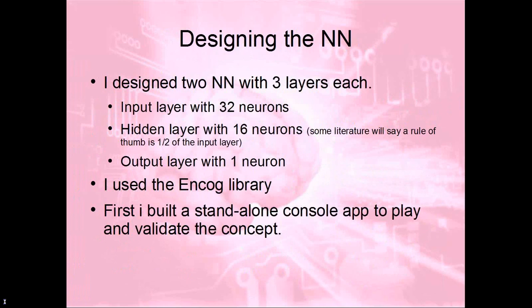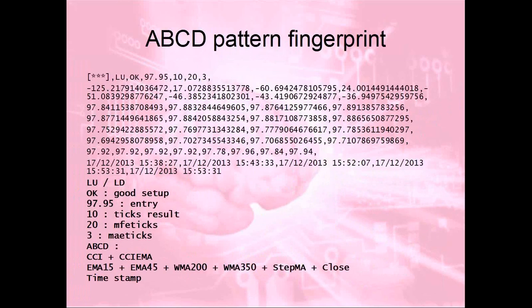A question was raised: when you have that many decimal points, does it influence the neural network — is it important to round those figures? Ron said he'd never thought about rounding and doesn't think it would have an impact, but acknowledged it could be tested. The concern raised was that the network might look for an exact match, and with 10 decimals that might cause issues. Ron suggested parking that issue for later discussion, as it relates to the topic of exact matching that would come up shortly.